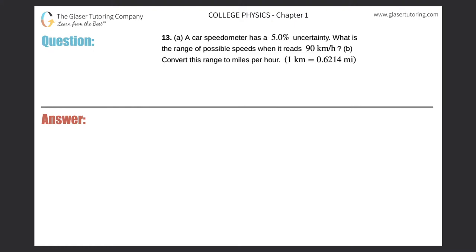Number 13. A car speedometer has a 5% uncertainty. What is the range of possible speeds when it reads 90 kilometers per hour? All right.